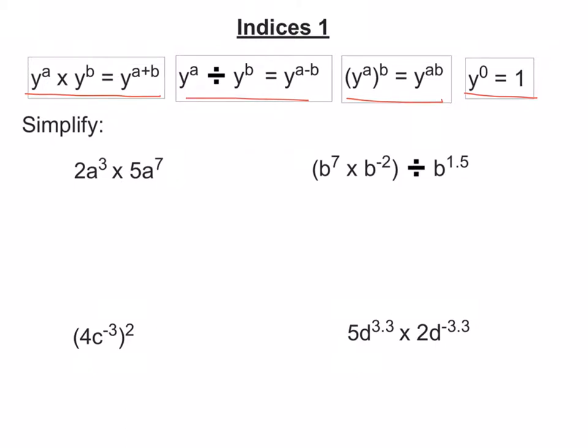So let's just have a go at these questions. The first one says 2a cubed times 5a to the 7. So the best way to do this is separate out the big numbers, so the 2 and the 5, and then the letter terms, put them together.